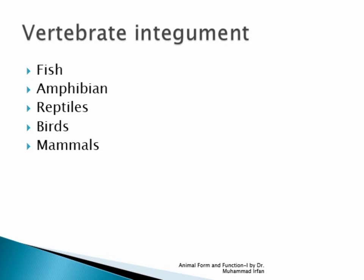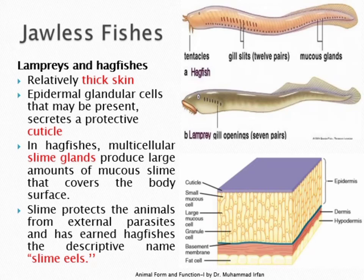Vertebrates include five classes: fish, amphibians, reptiles, birds, and mammals. Their integument composition is similar to invertebrate multicellular organisms, but they have some different associated structures. Fish are divided into three groups: jawless fishes, cartilaginous fishes, and bony fishes.